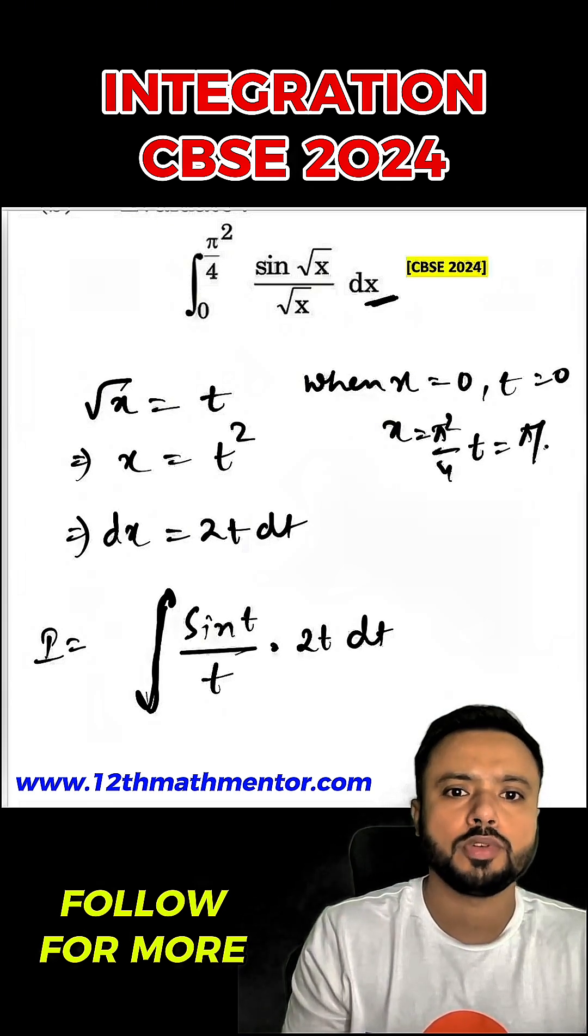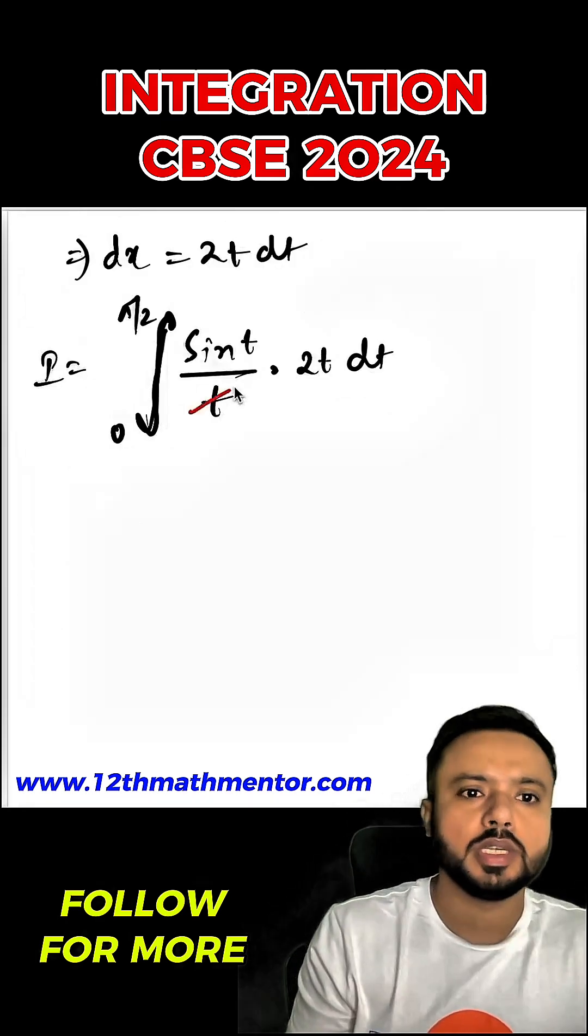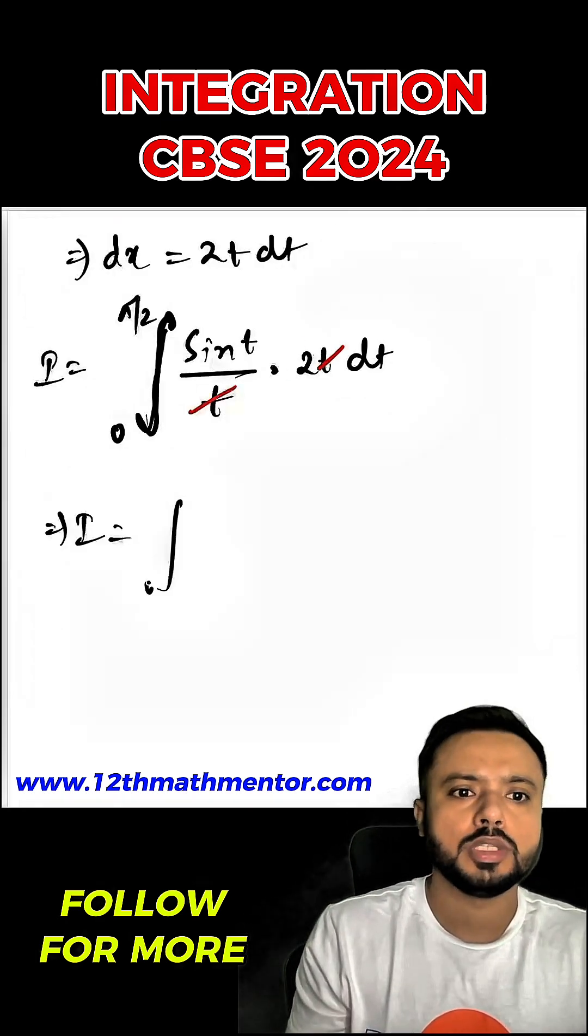So the new limit would be from 0 to pi upon 2. So this t and t is gone, so I would be equal to 0 to pi upon 2 sine t into 2 dt.